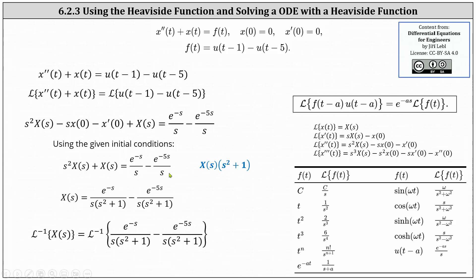Now we need to solve for X(s). Factoring out X(s) on the left gives X(s)(s² + 1). Multiplying both sides by 1/(s² + 1), we get X(s) = e^(−s) / [s(s² + 1)] − e^(−5s) / [s(s² + 1)].